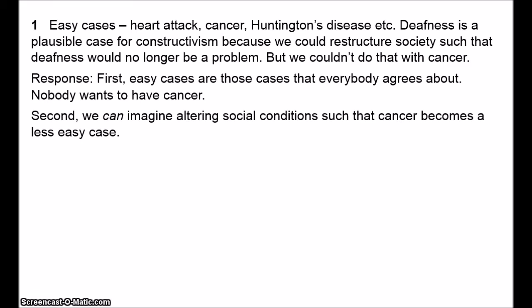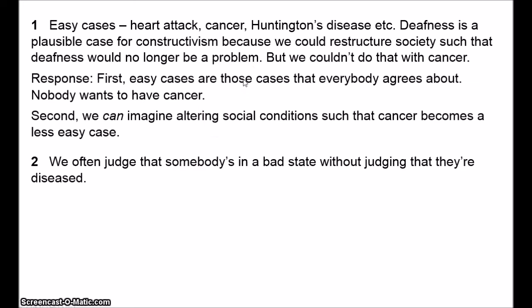A second objection is that we often judge that somebody is in a bad state without judging that they are diseased. The social constructivist says that classifying somebody as diseased simply involves making certain kinds of evaluative judgments about them. But then how do we explain the distinction between states that are diseases and states that are merely bad? Consider the debates about whether or not addiction counts as a disease. We all agree that addiction is bad, so the judgment that it's a disease must involve something more than this—or it must be a special kind of evaluative judgment.